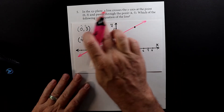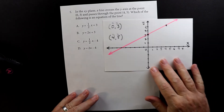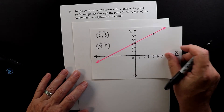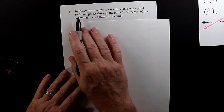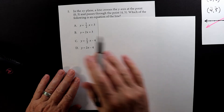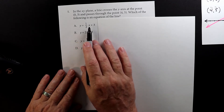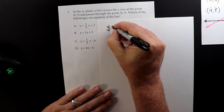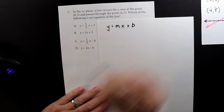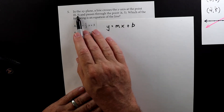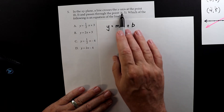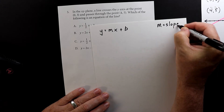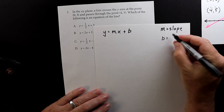This is the graph described in the problem. Now we need to figure out which of these equations would generate this line. When you have two points, we need to find something called the slope. Each one of these equations has y on one side and x on the other — this is in the form you'll hear in algebra class: y equals mx plus b. Here y is the second value in the points, x is the first value, m stands for slope, and b is your y-intercept.